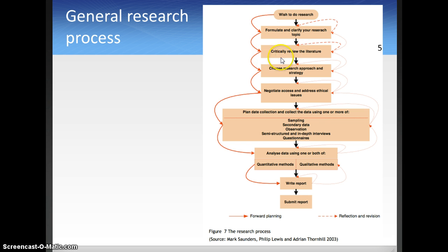Then you review the literature in a critical way. That's important. We look at the theory. What is out there already? What do I know about this particular question? Then we use a research approach and strategy. We look at access to different samples and we address ethical issues. For example, you also get approval from IRB boards and things like that.